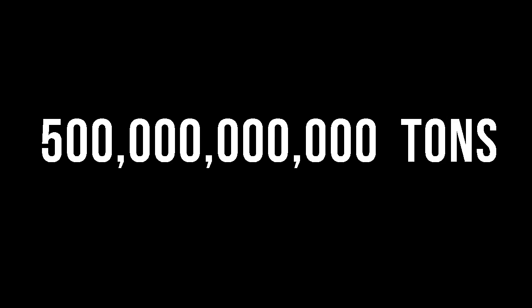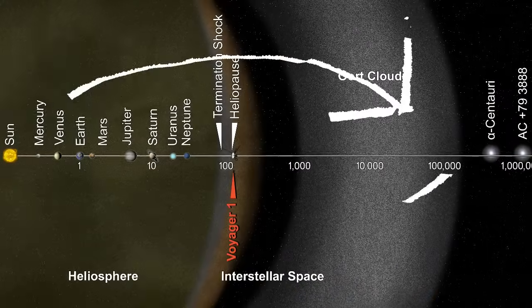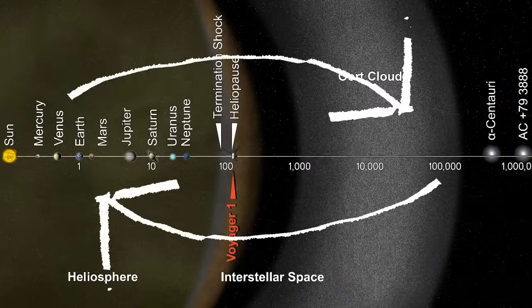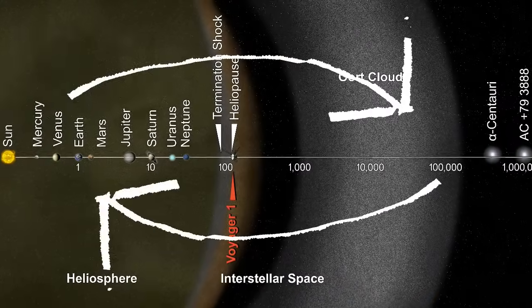That number is so huge that I can't even imagine it. If each grain of wheat weighs 30 milligrams, then all of them would weigh 500 billion tons. If the average size of each grain is 4 millimeters, then putting them side by side would take us to Alpha Centauri and back — that's more than eight light years.